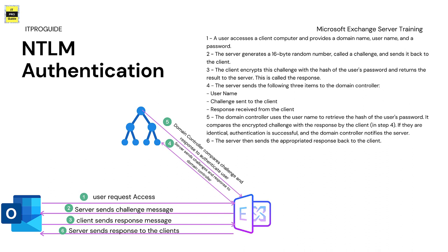The hash value can be transferred over the network so that even if someone captures it, they cannot recreate the password. Once the hash is prepared, the client sends the username to the Exchange Server. The Exchange Server generates a 16-byte random number called a challenge and sends it back to the client. The client encrypts this challenge with the hash of the user's password and returns the result to the Exchange Server — this is called the response.